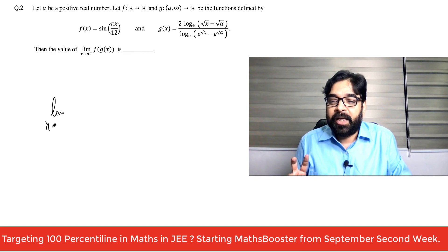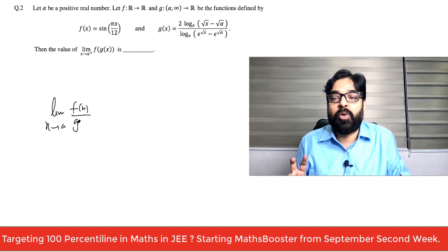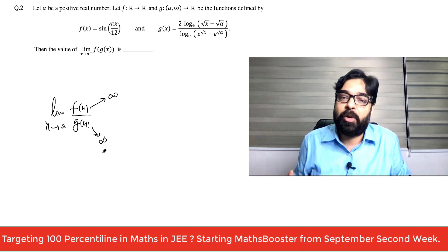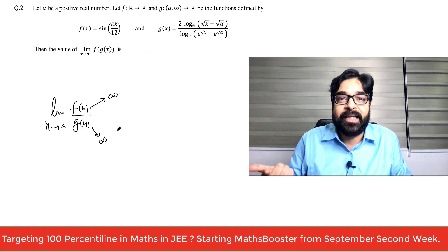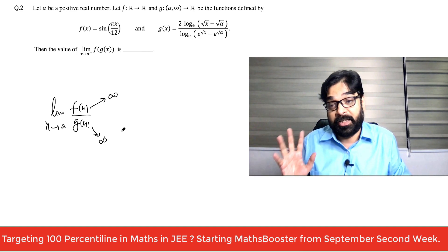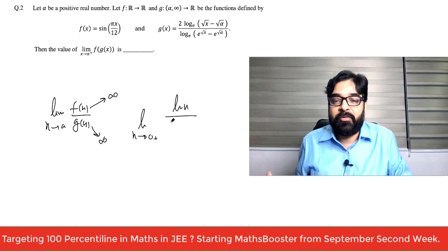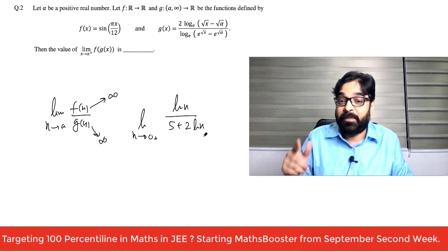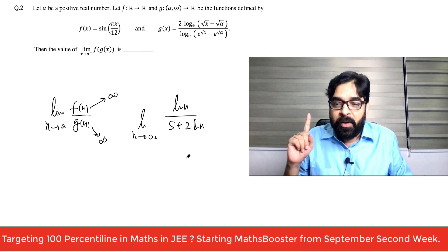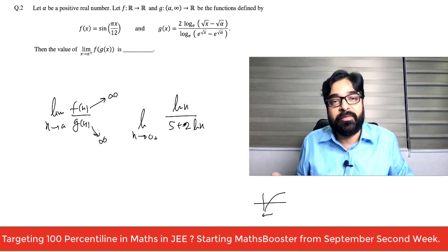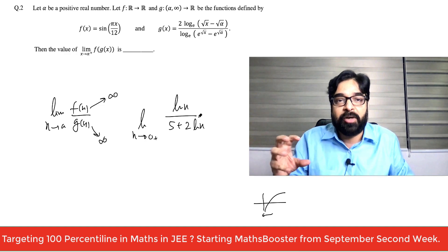The first logic: whenever a limit is coming and both numerator and denominator are approaching towards infinity, you have an infinity over infinity form. For example, limit x approaches to zero plus of ln x by (5 + 2 ln x). When x approaches zero, ln x approaches minus infinity, so this is an infinity over infinity form.